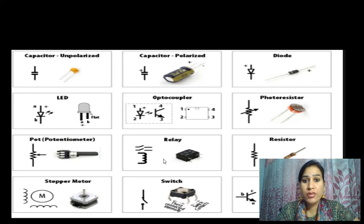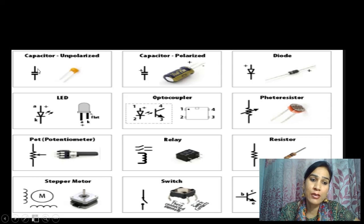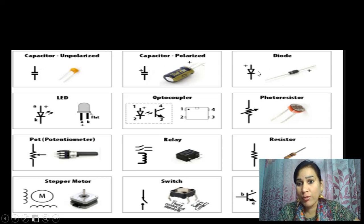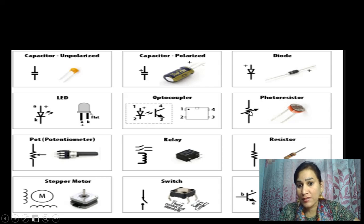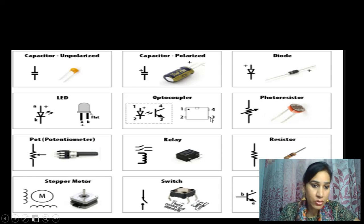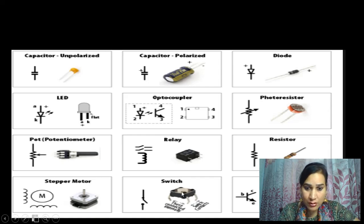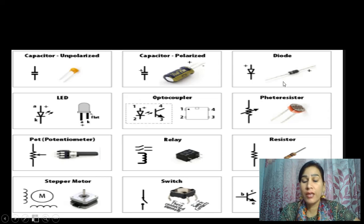These are some more components used in basic electrical engineering. Capacitor — we are having polarized and unpolarized capacitors. The unpolarized one can have any part used as positive or negative. The polarized capacitor has positive and negative terminals different. This is a symbol for diode, in which we are having positive and negative. This triangle shows P and this bar shows N. This is a symbol for LED, this is for optocoupler, this is for photoresistor — resistance which is affected by light. When light falls on it, resistance changes. Potentiometer, relay, resistor — these are the actual components and these are the symbols used for circuit making.